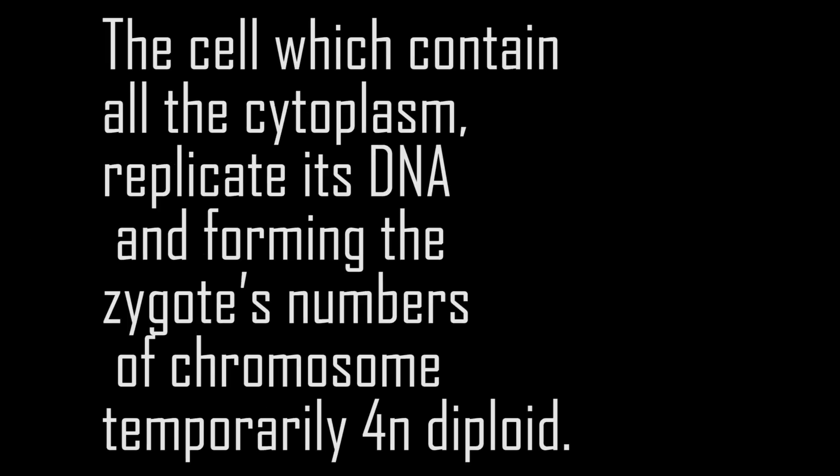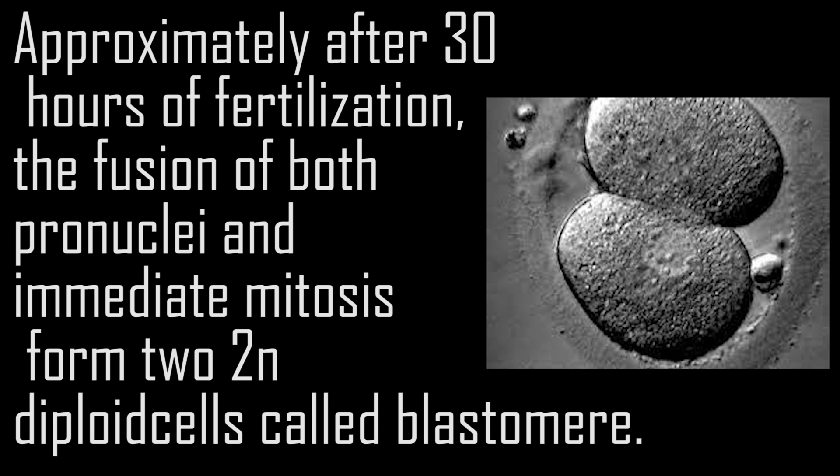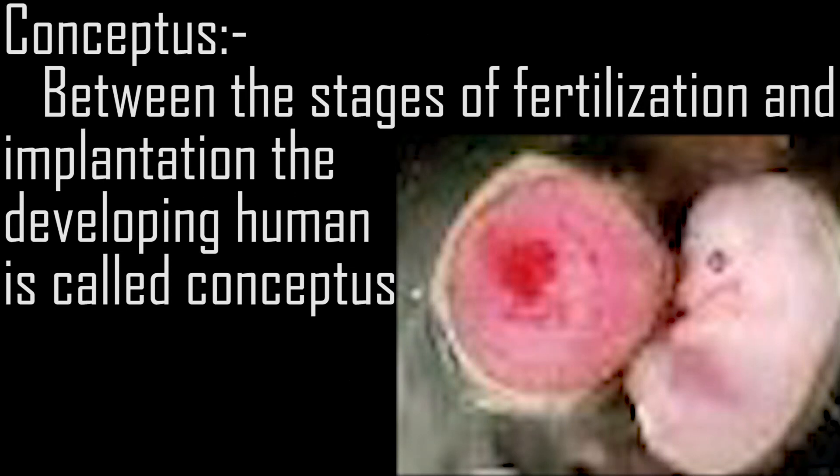The cell which contains all the cytoplasm replicates its DNA, temporarily making the zygote's chromosome number diploid. Approximately 30 hours after fertilization, the fusion of both pronuclei and immediate mitosis forms two diploid cells called blastomeres. Between the stages of fertilization and implantation, the developing human is called the conceptus.